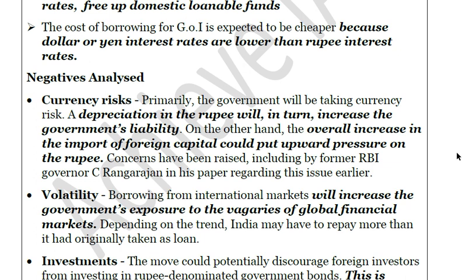First, there is currency risk. If you are borrowing from an external market in external currency, say in dollars, there will be more inflow of foreign currency into the country, which will automatically lead to the appreciation of the rupee. If enough appreciation takes place, it will affect the export sector. Also, consider a depreciation scenario — if today the government borrows 100 dollars and promises to return 120 dollars on maturity, only 20% interest appears, but consider depreciation of the rupee.